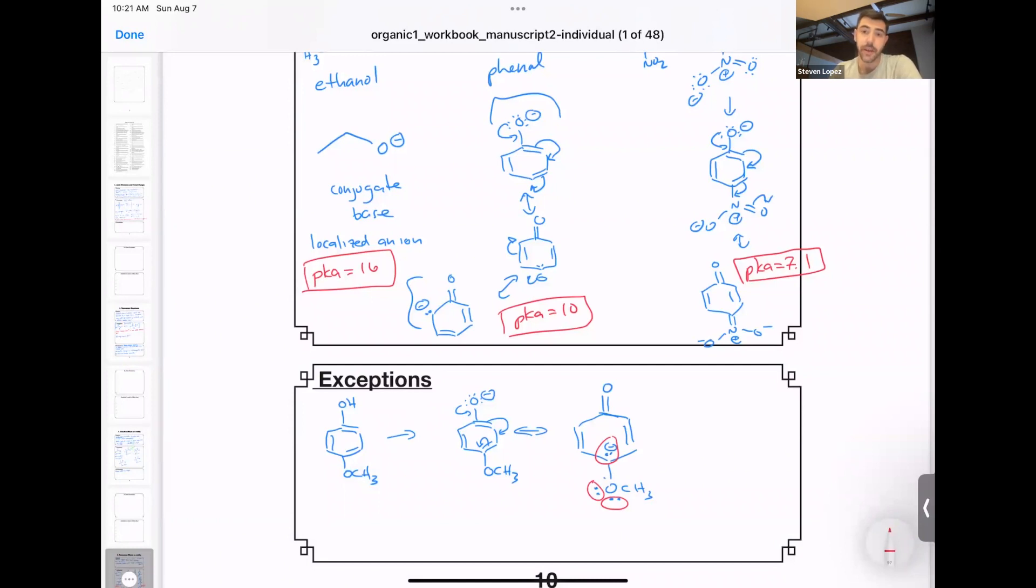One negative charge next to a lone pair, two lone pairs, is pretty destabilizing. This resonance form is technically correct, but it's probably one that doesn't contribute strongly to the electronic structure of the compound.